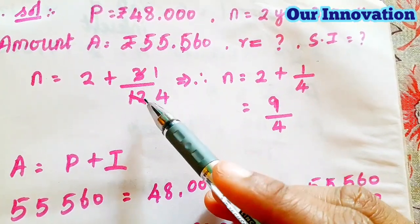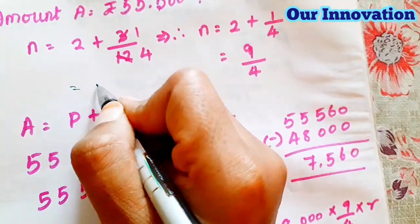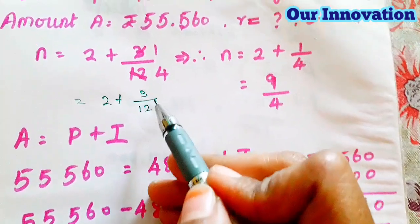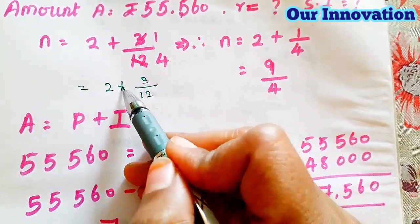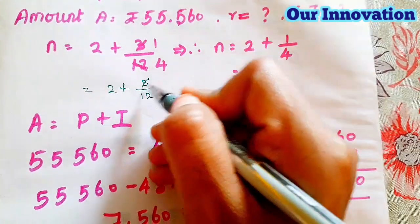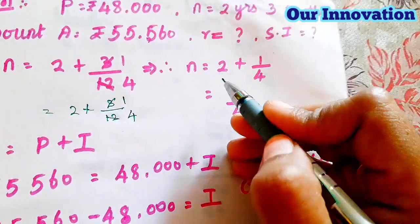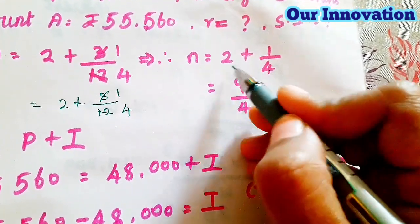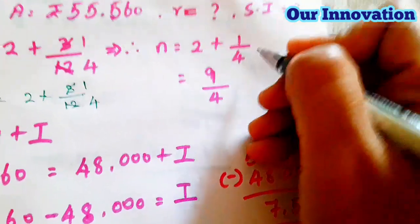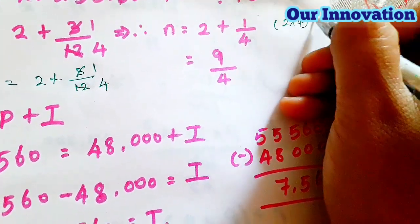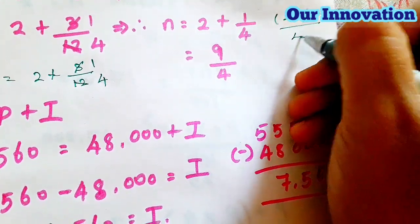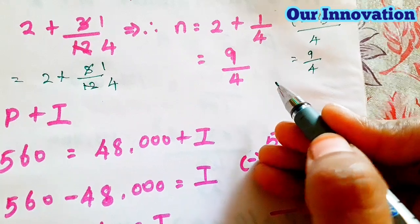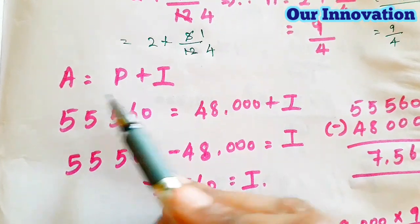Converting n: 2 years 3 months = 2 + 3/12. Simplifying the fraction, 3/12 = 1/4, so n = 2 + 1/4. Converting to an improper fraction: 2 × 4 + 1 = 9, so n = 9/4. Now using A = P + I, since we know A and P, we subtract to find I.